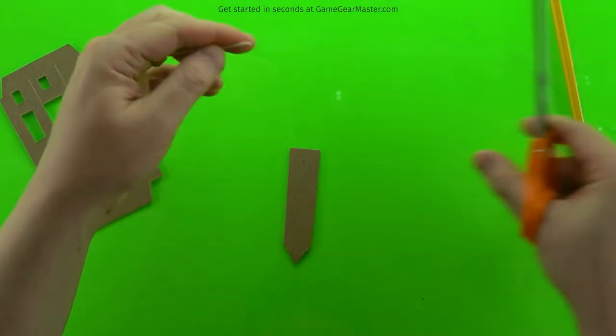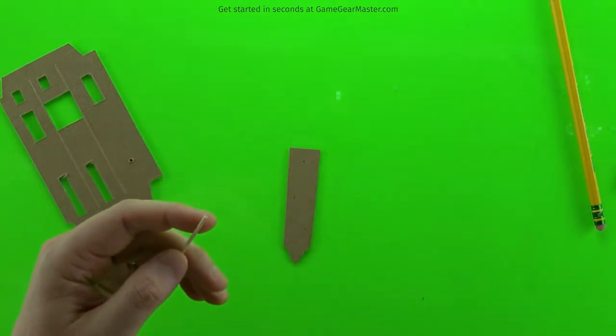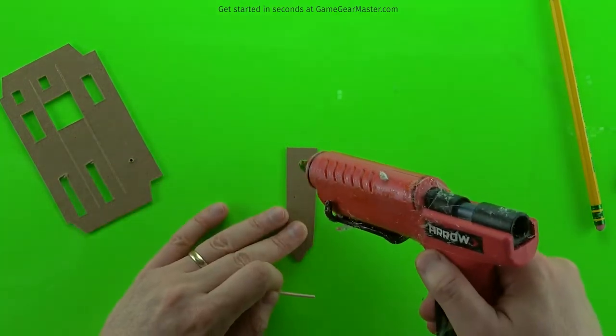And now we need to prep our toothpick. We want to take that sharp edge off because we want to have a flat edge to glue onto the Decorator. Then we just hot glue it onto our mark.